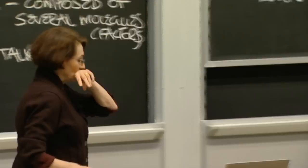Here's a diagram of localized determinants — also called localized regulators. A mother cell has regulatory factors concentrated on one side. When that cell divides, one daughter gets them and the other does not. If those are regulatory factors, the daughter that gets them will go on to do something different than the one that doesn't, and you can get two different cell types emerging from this division.